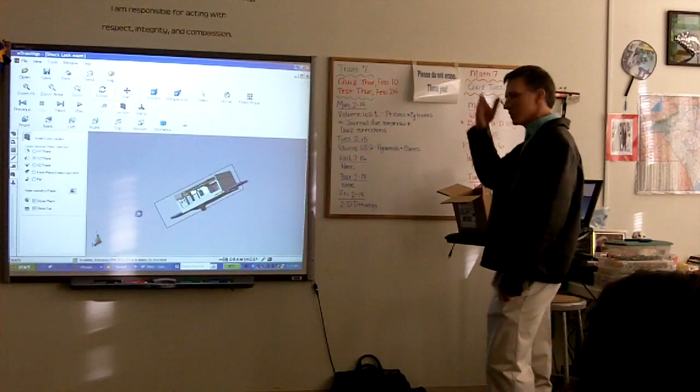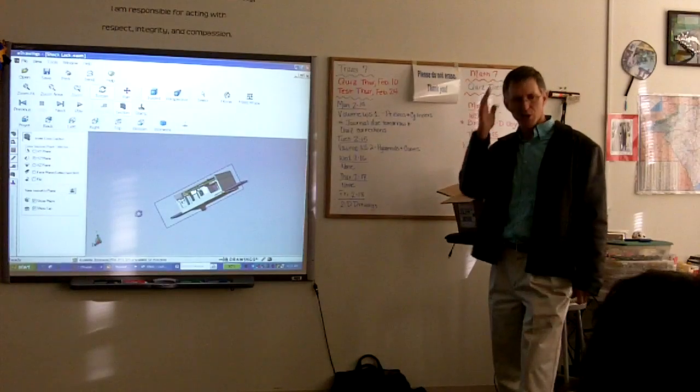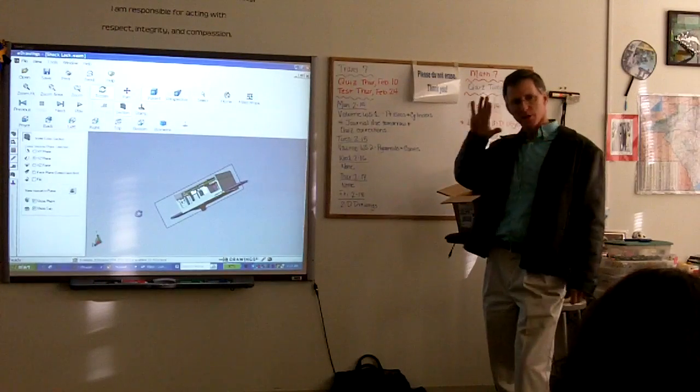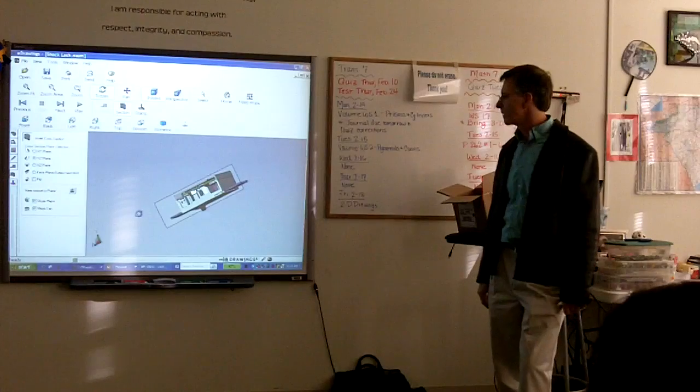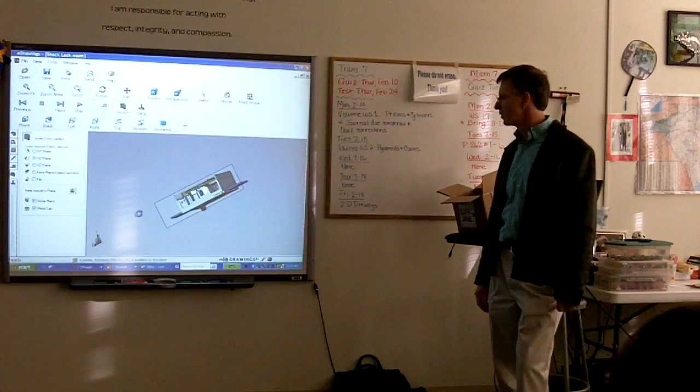But you can move that cross-section around so that you can see what the cross-section is. It's like a slice through something. You can see what it's like from the side.